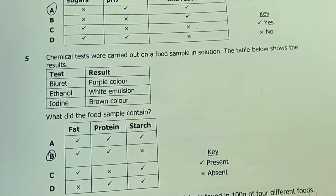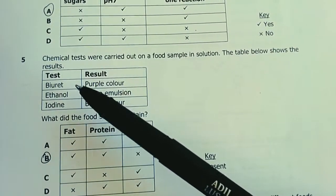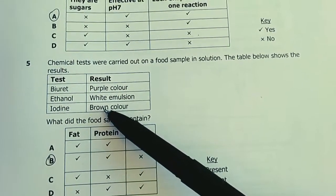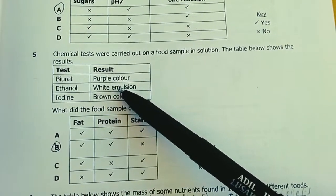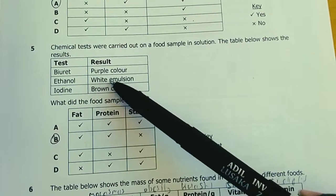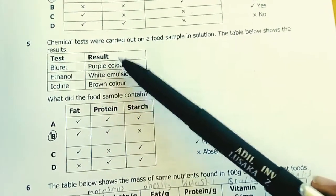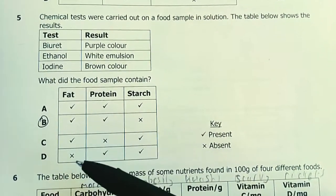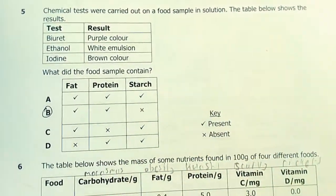Number 5. Chemical tests were carried out on a food sample. Buret reagent is for protein, this is for lipids, iodine is for starch. Iodine result: brown, meaning no starch was there. It's supposed to be dark blue or blue-black. White droplets make an emulsion, meaning lipids are present. Purple color from blue means proteins are present. So proteins and lipids were present, but starch was absent. What did the food sample contain? Our answer is B.